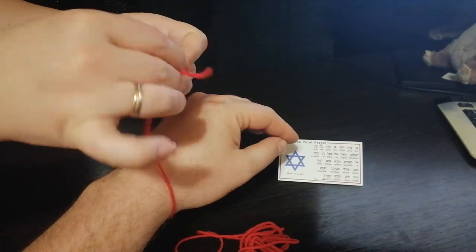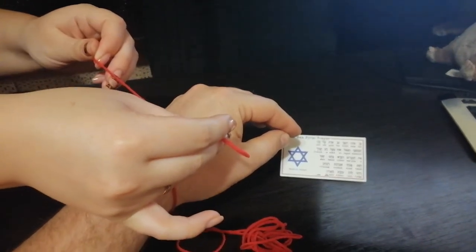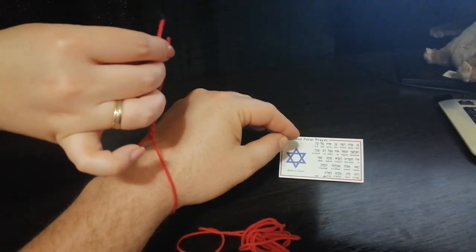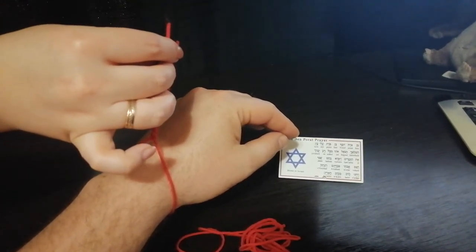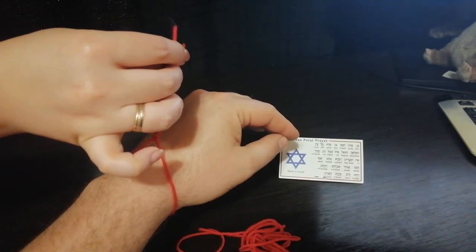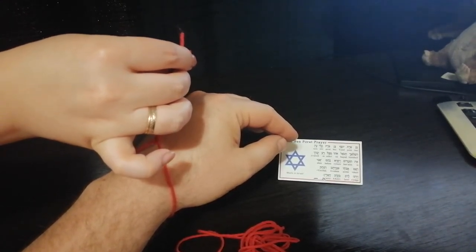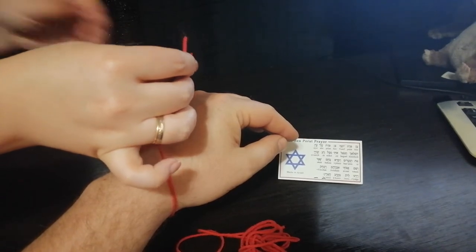Ben Porat Yosef, Ben Porat Porat Aleian, Banit Zadar Aleisha, Hamalak Hagoyaloti Mikkel Raya Varari Kahanaram Vaya Kare Baram, Shmi Veshem Avatai Avraham Vizchak Vyadrula Rav Bekare Haaretz.